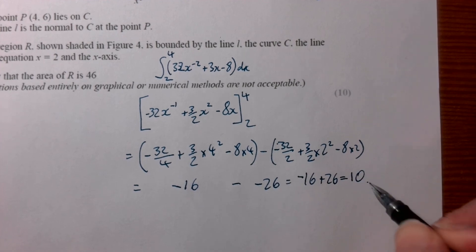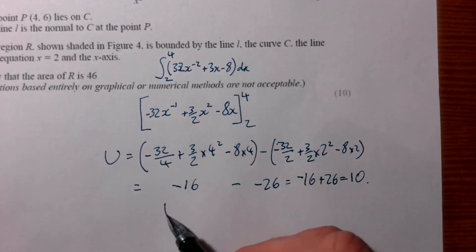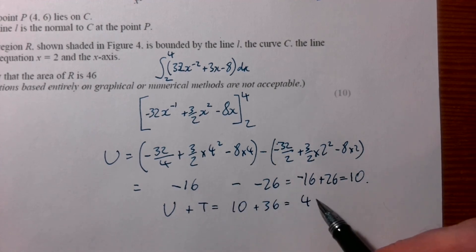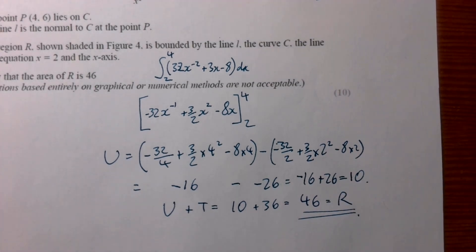Which equals 10. So that was U, so U plus T equals 10 plus 36, which equals 46, which is R, and it's all done.